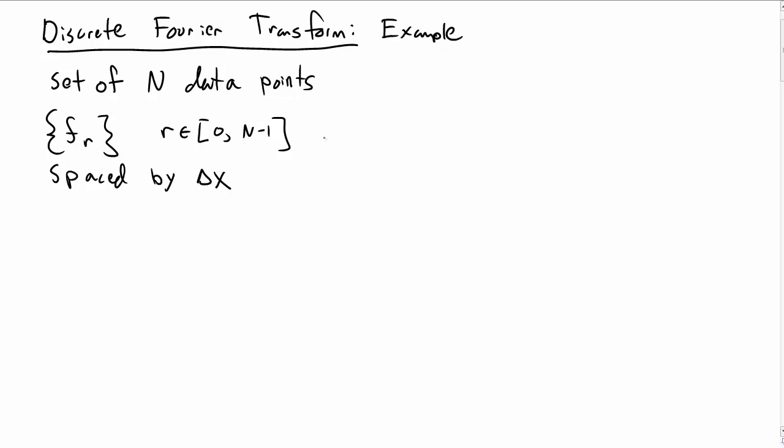Let's look at an example of the discrete Fourier transform. Recall we have a set of N data points, f sub r, spaced by delta x.